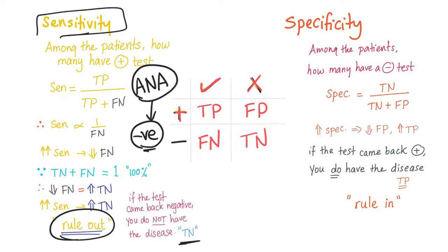Now let's go to specificity. Among the patients with no disease, how many have a negative test? Specificity equals true negatives divided by true negatives plus false positives. As specificity increases, false positives decrease. Since false positives and true positives together equal 100%, when false positives decrease, true positives increase. A specific test has a high rate of true positives.